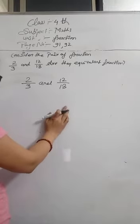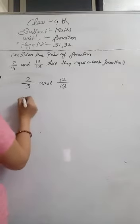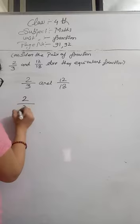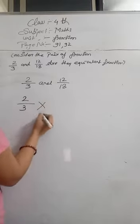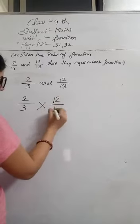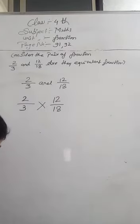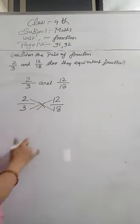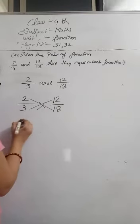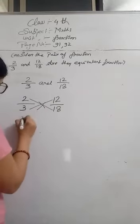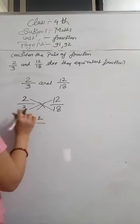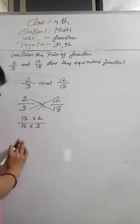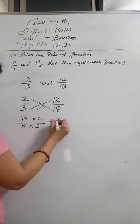Means these are equal or not. So how to find are they equal or not? First we will write here 2 by 3 multiplied by 12 by 18, and we will do cross multiplication. So 18 multiply 2 and 12 multiply 3. So 18 times 2 means 36.